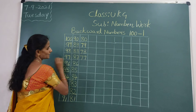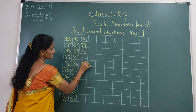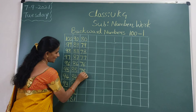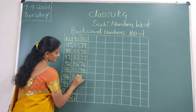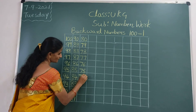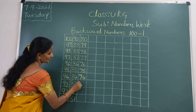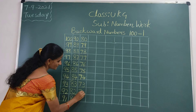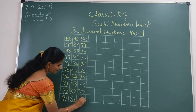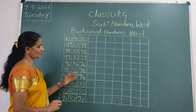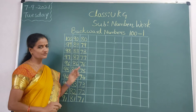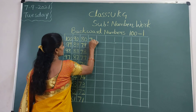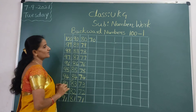77, 76, 75, 74, 73, 72, 71. Before number: 70.